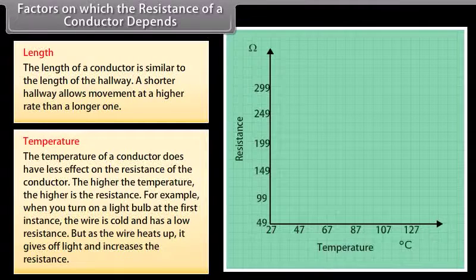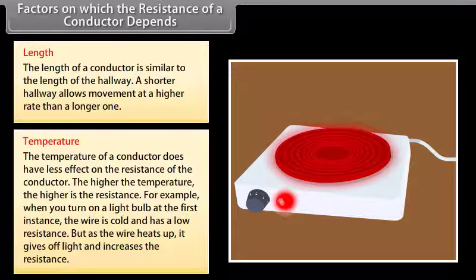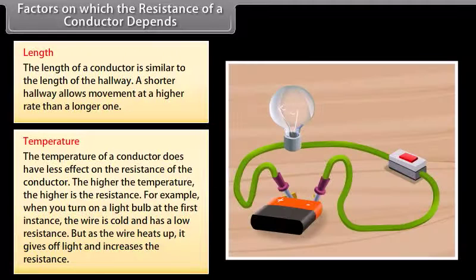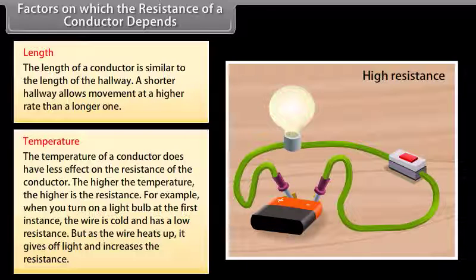Temperature also affects the resistance of a conductor. The higher the temperature, the higher the resistance. For example, when you turn on a light bulb, the wire is initially cold and has low resistance. But as the wire heats up, it gives off light and its resistance increases.